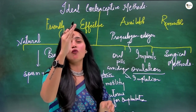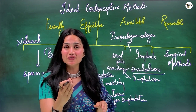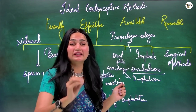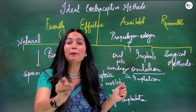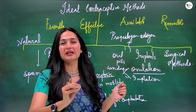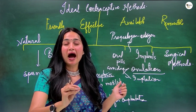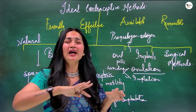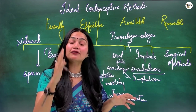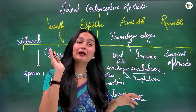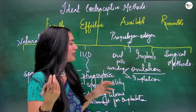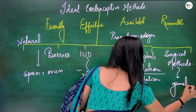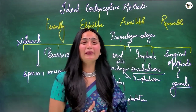In the case of intrauterine devices, we reduce sperm motility, destroy the fertilizing capacity of sperm, do phagocytosis of sperm, and also make the uterine environment unsuitable so that fertilization and implantation are not possible. In the surgical method, we do not allow gametes — sperm and egg — to meet.